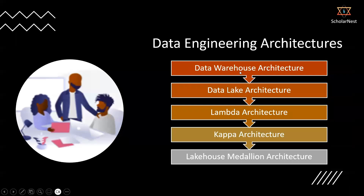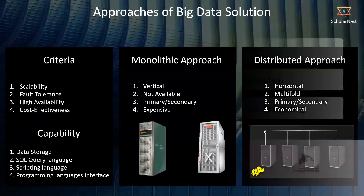Architecture evolved from data warehousing architecture to data lake architecture, then lambda, then kappa, and finally medallion architecture. So let's talk about the data lake architecture — how the platform looked after evolving it from the data warehouses.